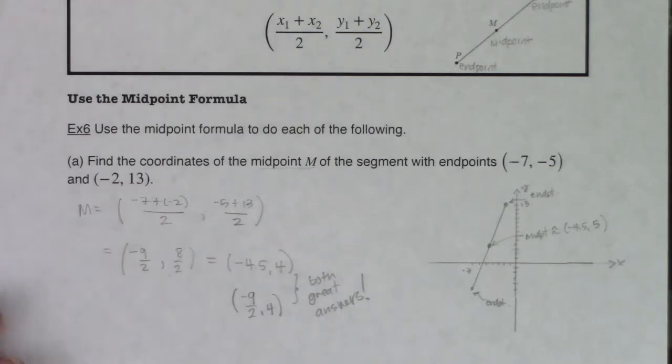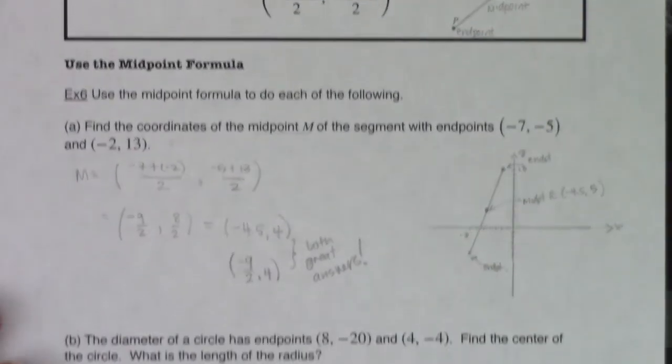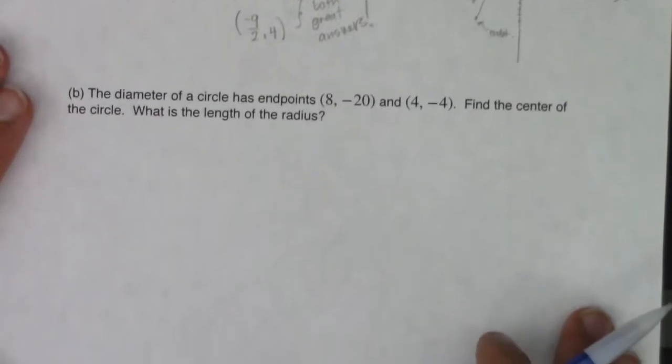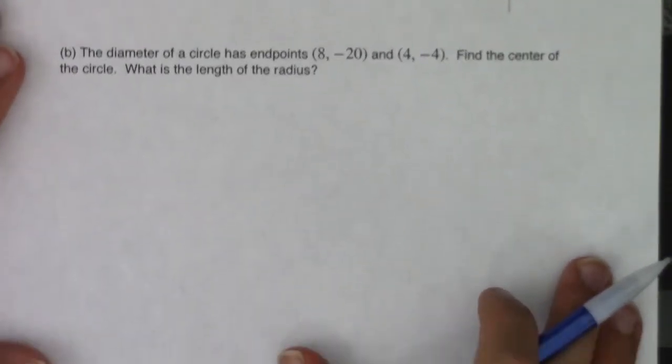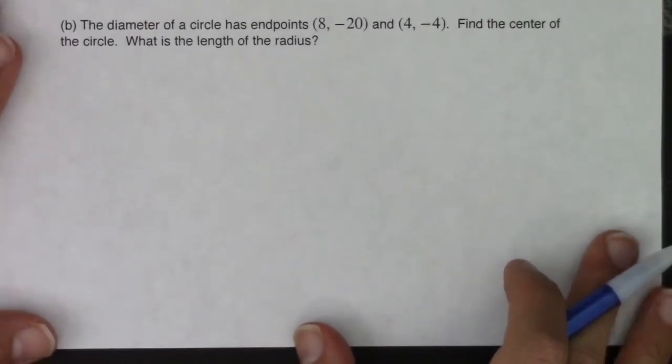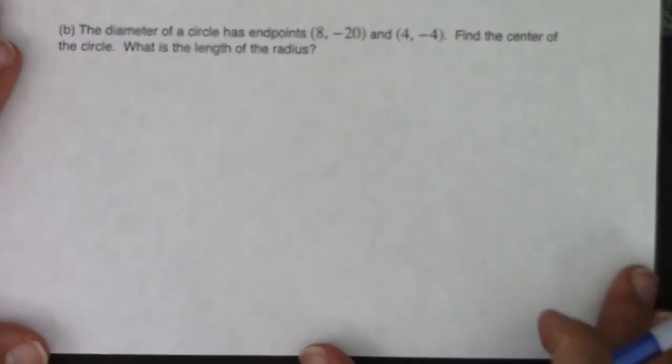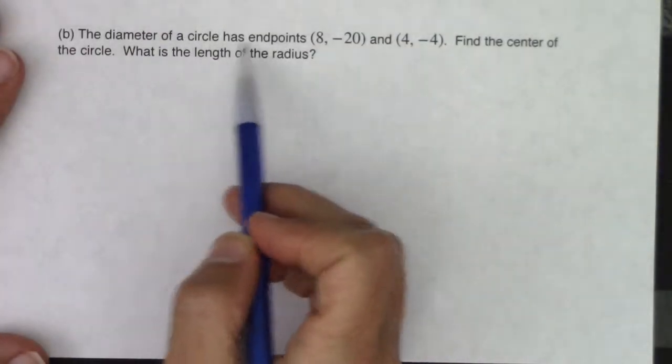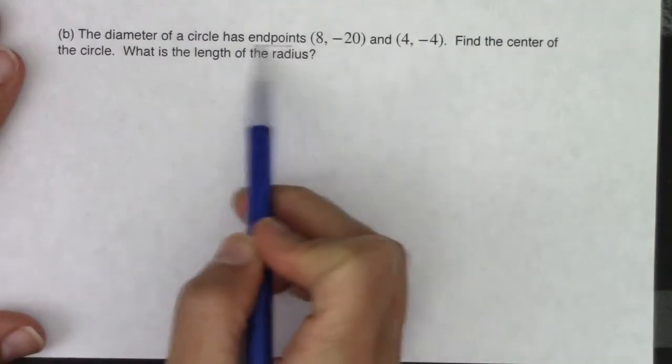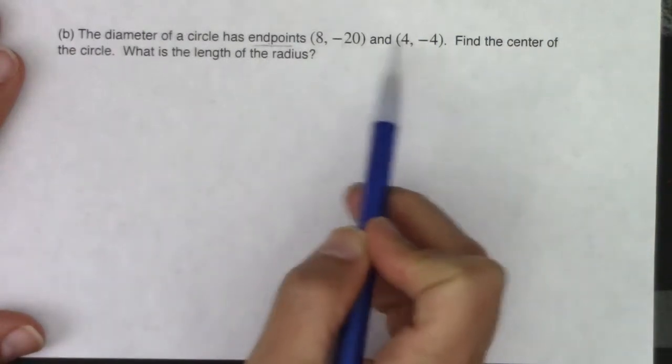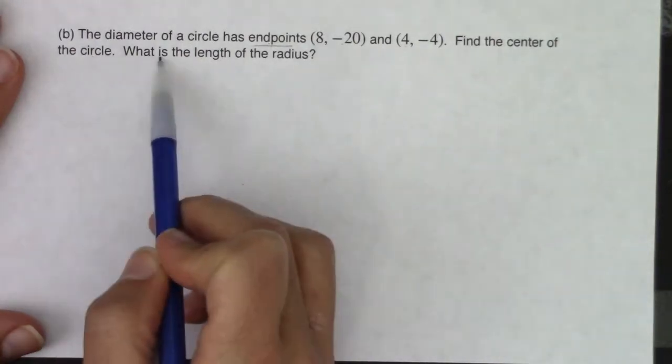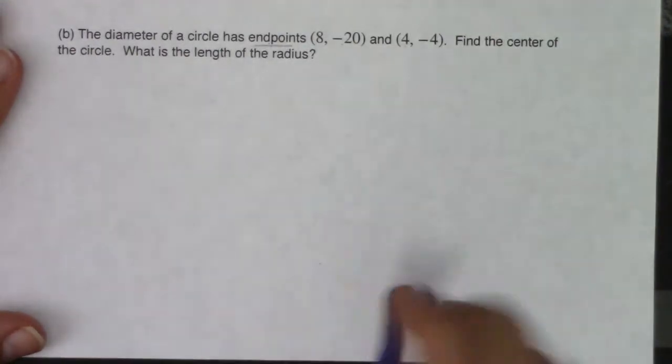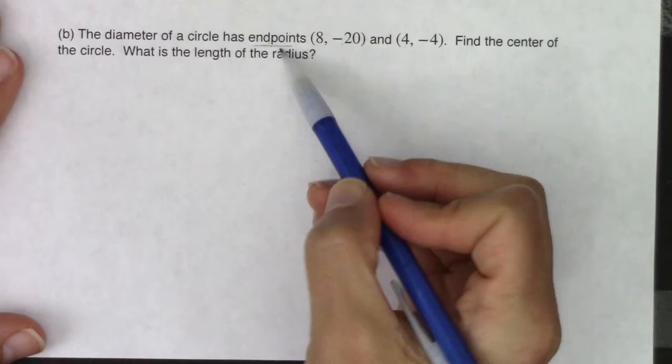So then let's take a look at this next one. So this is saying now the diameter of a circle has endpoints, I want to be clear, endpoints, 8 negative 20 and 4 negative 4. Find the center of the circle and then what is the length of the radius.